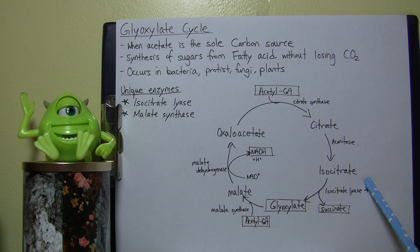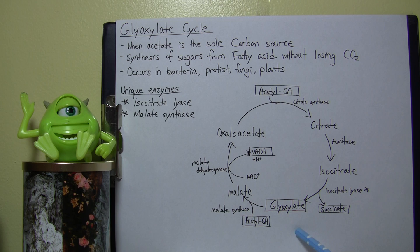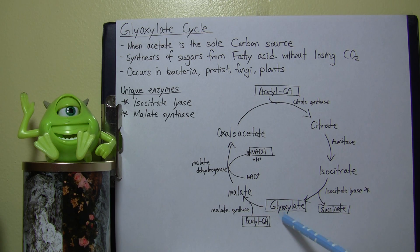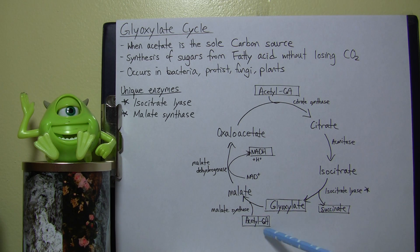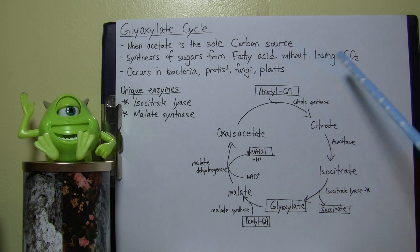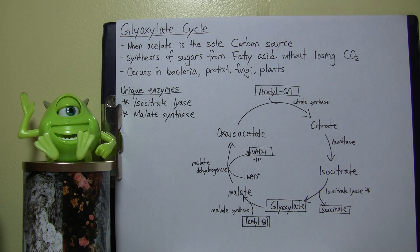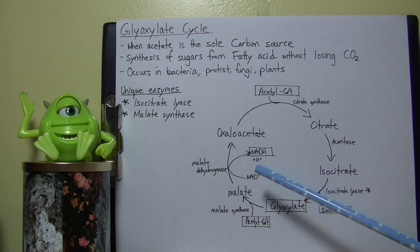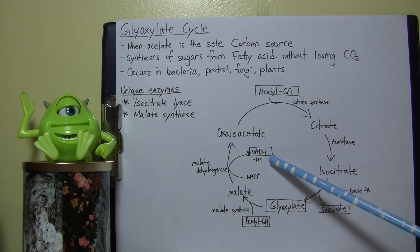The key divergence is here: isocitrate is converted into succinate and glyoxylate using isocitrate lyase. Then glyoxylate is converted into malate when acetyl-CoA is assimilated, using malate synthase. This malate then returns to the normal TCA cycle, becoming oxaloacetate via malate dehydrogenase, producing NADH in the process.